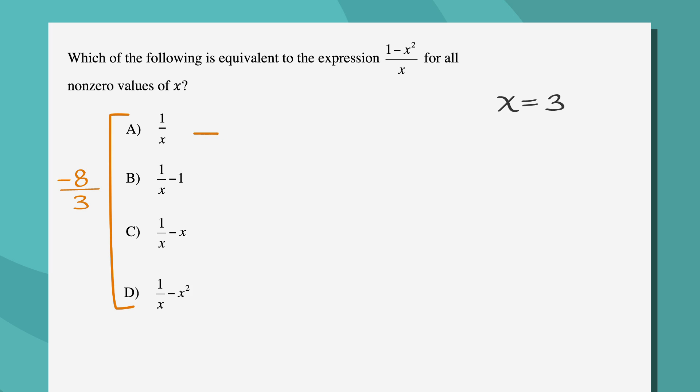So if we plug in x equals 3 into answer choice A, 1 over x becomes 1 third. That doesn't match, so we'll have to keep looking. When we plug x equals 3 into answer B, we get 1 third minus 1, or negative 2 thirds. That doesn't match either.